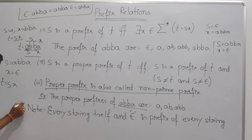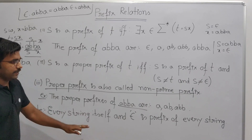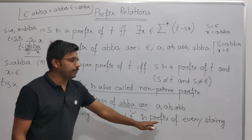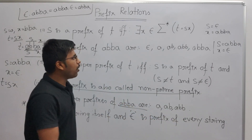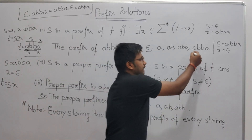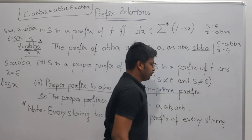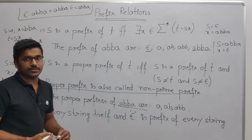So we can conclude that epsilon and the string itself are always a prefix of every string — epsilon and the same string will always be a prefix of every string.